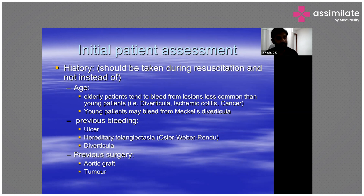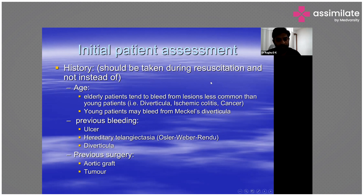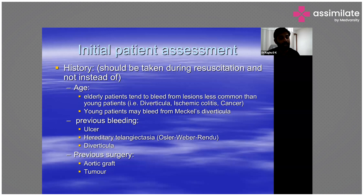Prior history of gastrointestinal bleeding is also important. If a patient has a prior history of peptic ulcer disease that bled and returns with melena or hematemesis, chances are they're bleeding from the same etiology. If someone has a history of Osler-Weber-Rendu disease, they can have telangiectasias throughout their colon. Elderly patients with prior diverticular bleeding presenting with massive lower GI bleeding should raise suspicion for diverticulosis. Prior history of surgery — such as an aortic graft or tumor history — is also important.